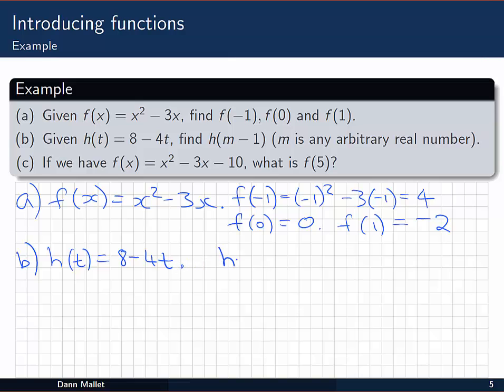What we can do is we'll say h of m minus 1, and we replace everywhere we see a t with m minus 1. So 8 minus 4 times m minus 1.